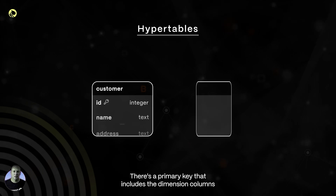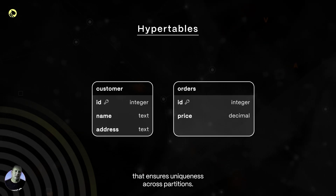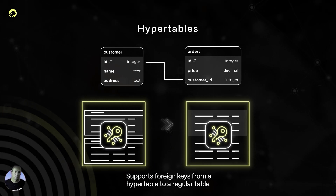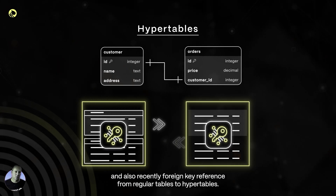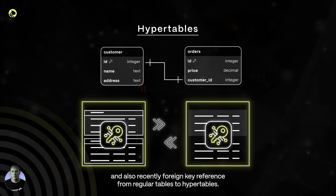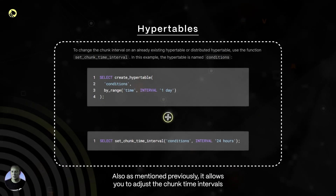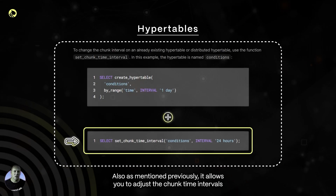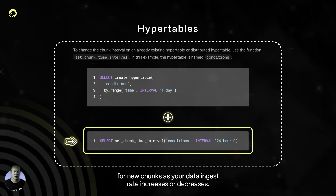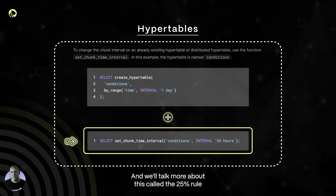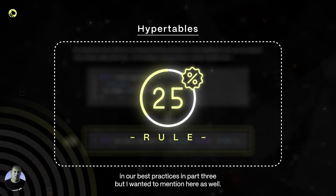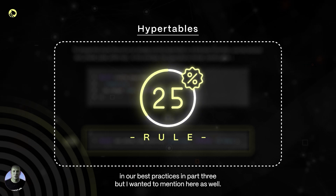There's a primary key that includes the dimension columns, which ensures uniqueness across partitions. It supports foreign keys from a hyper table to a regular table and also recently foreign key references from regular tables to hyper tables. As mentioned, it allows you to adjust the chunk time intervals for new chunks as your data ingest rate increases or decreases — we'll talk more about this, called the 25 percent rule, and our best practices in part three.